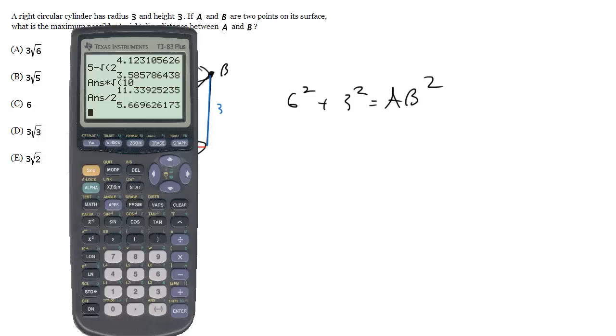And let's go ahead and calculate this. So it's going to be 36 plus 9, which is 45. And then we'll square root it. And we get 6.71.